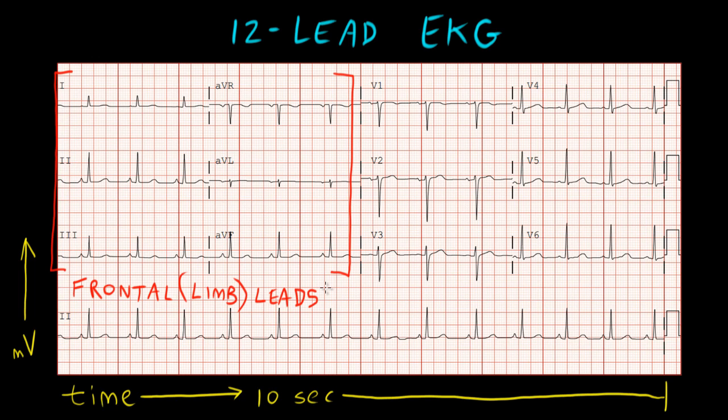Here on the right side, we have our precordial leads. The precordial leads are also known as the chest leads, and they're derived from six electrodes that are placed on the chest. They let us see what's going on in the anteroposterior plane.